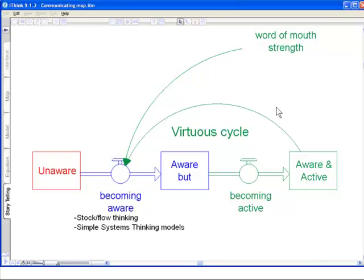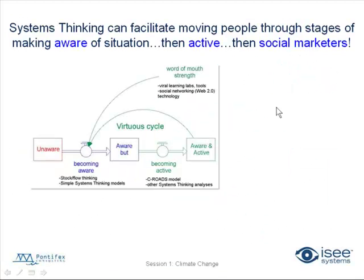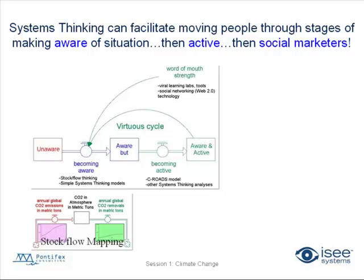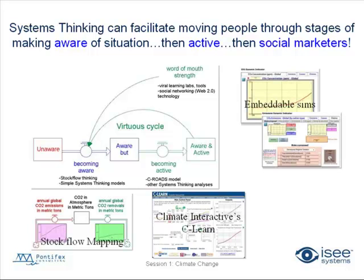Some of the tools that can be used: stock and flow thinking and simple systems thinking models can help people become aware. There's a C-ROADS model done by Climate Interactive and other systems thinking analyses that can help people become active and really understand the issues. And then there are tools like viral learning labs, social networking technology, and embeddable simulations — which I'll be showing here today — that are ways to really make this virtuous cycle accelerate. So if you look at those types of things: stock and flow mapping, the C-LEARN model, the C-ROADS model by the Climate Interactive folks, and embeddable sims.